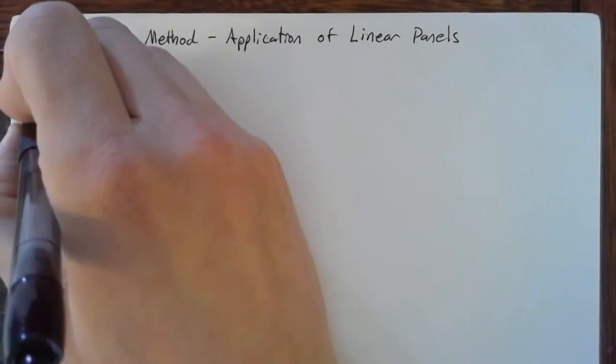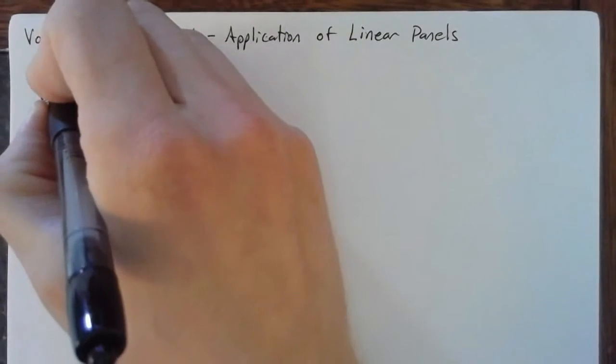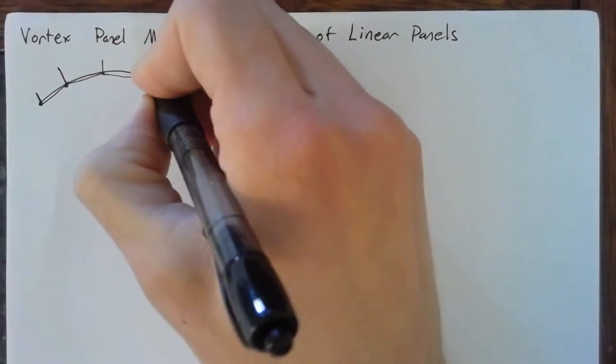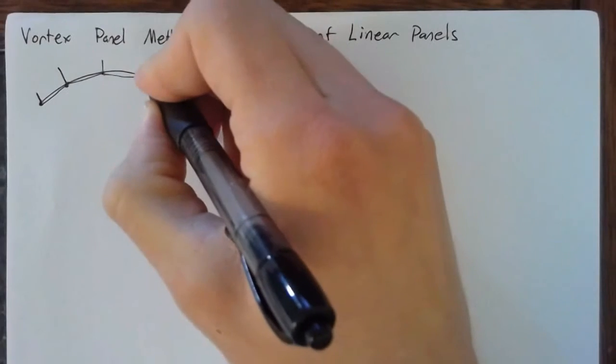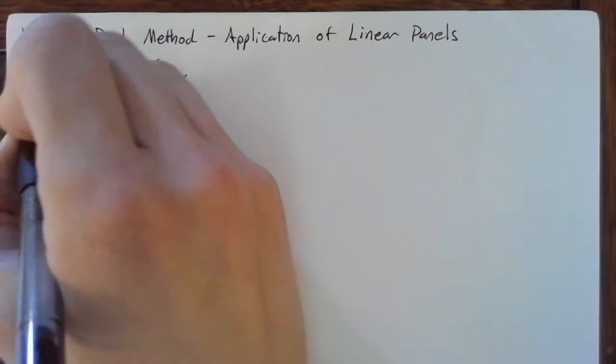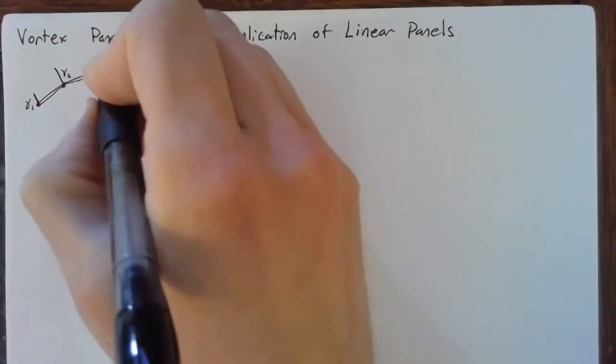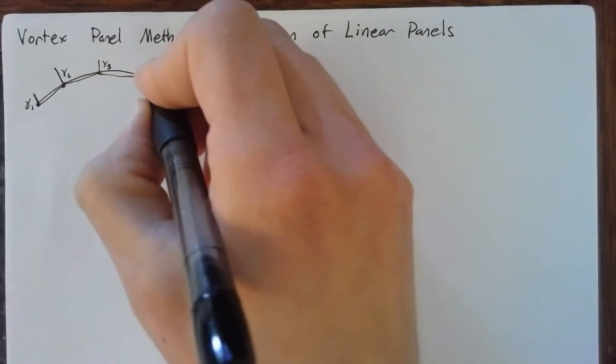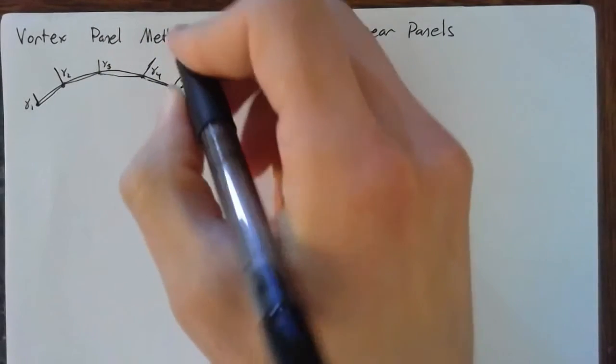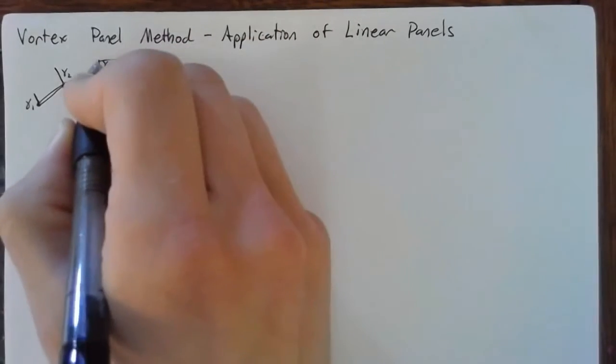Now, the difference between the linear panel method and the constant panel method is that we're interested in the gammas at these points. So instead of looking at the gammas over an entire panel, we want to see the gamma 1, gamma 2 at the points between the panels.